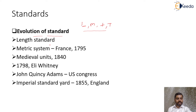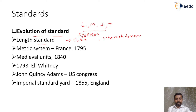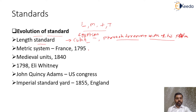Looking at history, the first standard was developed for the measurement of length. It was developed by the Egyptians and was called the Egyptian cubit. The royal cubit was the first master standard, made of black granite, and was used in the construction of the Egyptian pyramids.